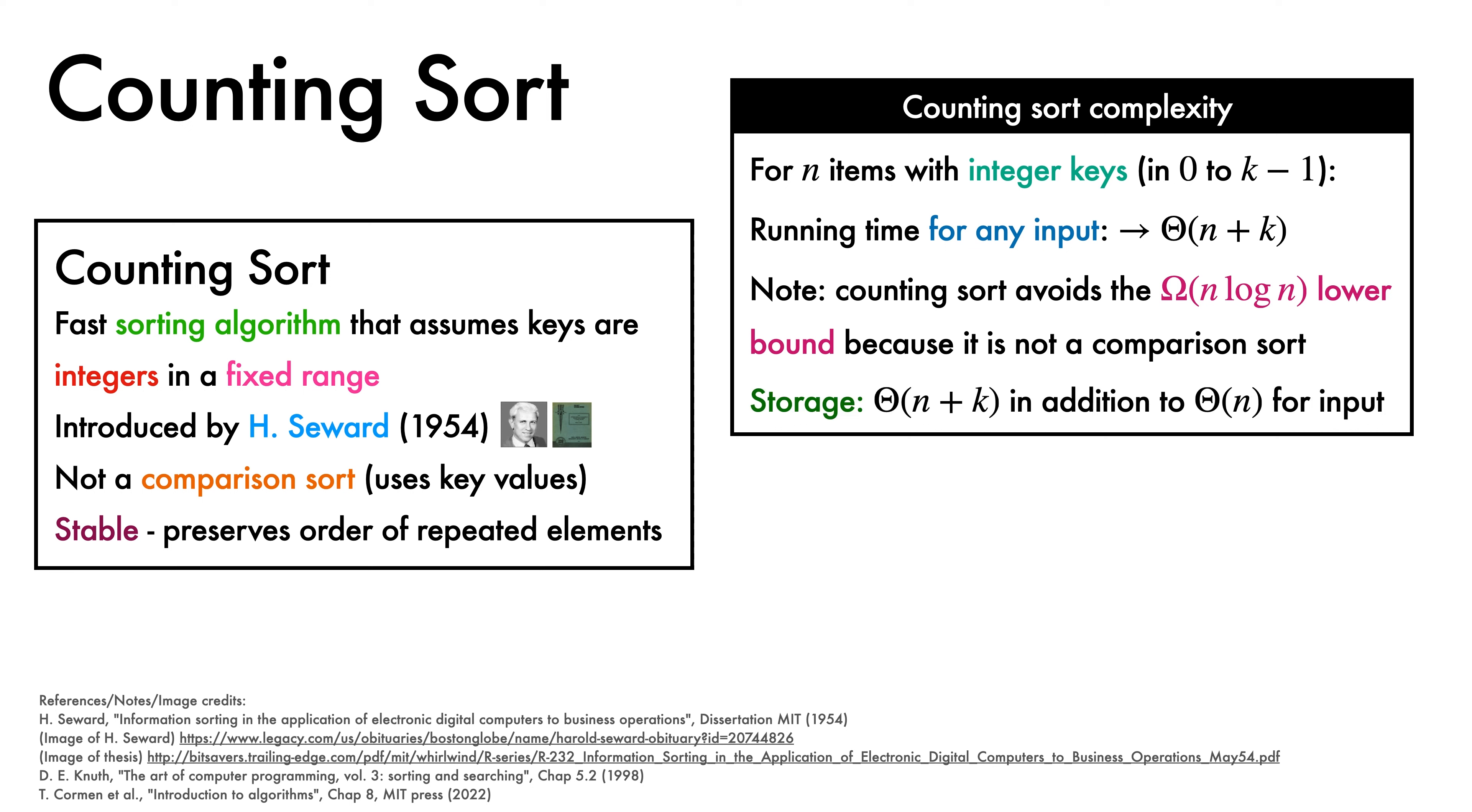The storage required for Counting Sort is Big Theta of n plus k in addition to the Big Theta of n required to store the input. Counting Sort sees usage as a building block for radix sort. It's also particularly useful when the number of possible keys is not too big, such as when k is Big O of n. In this case, the runtime is simply Big Theta of n.